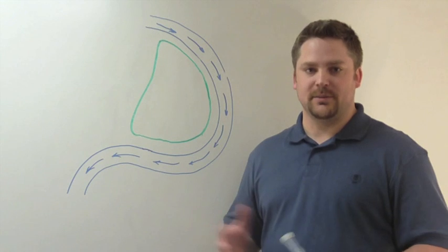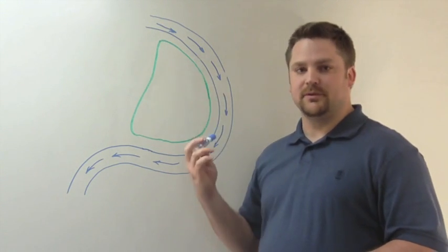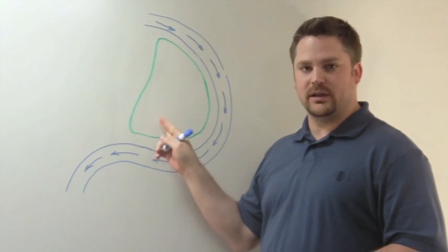Behind me, I have an example of a typical floodway on the Mississippi River. In blue, you see the Mississippi River channel on the outside edge of the floodway, which is drawn in green.